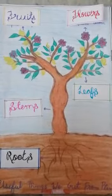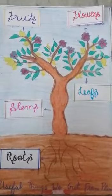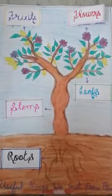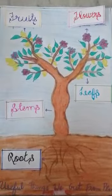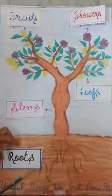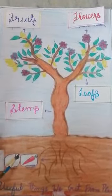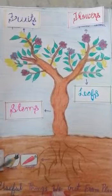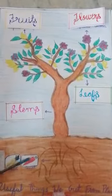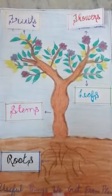Each part of the plant is useful for us. From roots we get radish, carrot, turnip, etc.